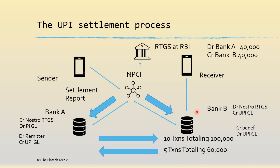Similarly, the settlement report is sent to Bank B, wherein the debit of the NOSTRO RTGS happens and the UPI GL is credited, knocking off the UPI GL. This in essence is the UPI settlement process wherein Banks A and B settle among themselves. The scenario can become more complicated when there are more banks, but the process remains the same — the net debit and net credit positions of each bank are arrived at by NPCI.